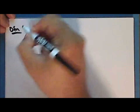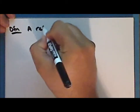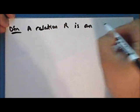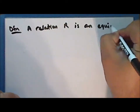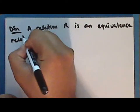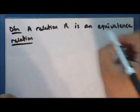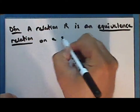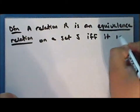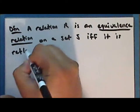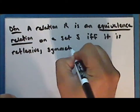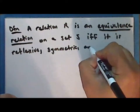New definition. A relation R is an equivalence relation on a set S if and only if it is reflexive, symmetric, and transitive.